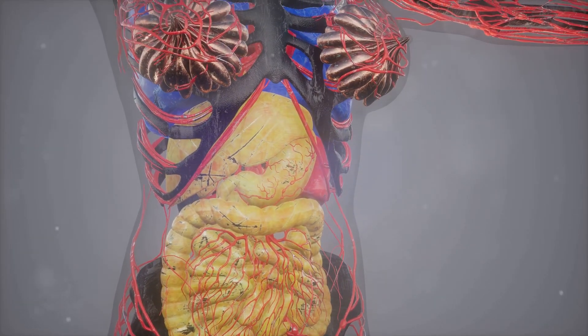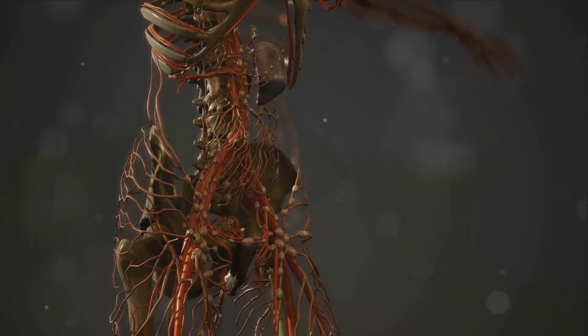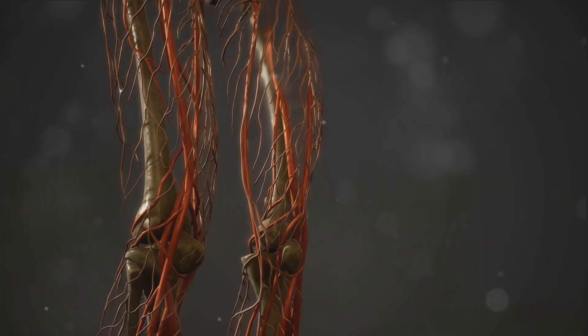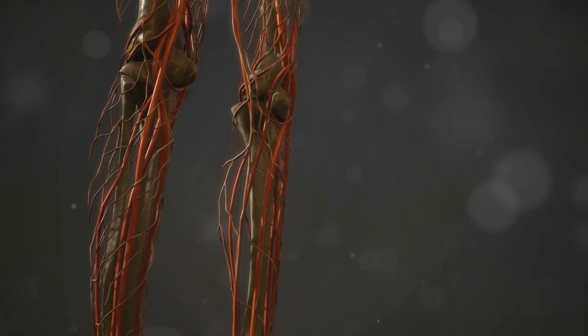With the path now clear, blood rushes into the corpora cavernosa, filling the spongy tissues until they expand, leading to an erection.